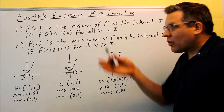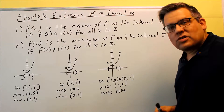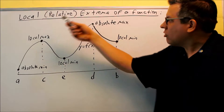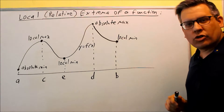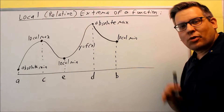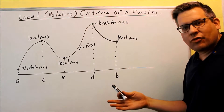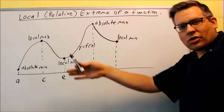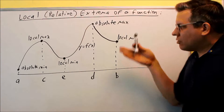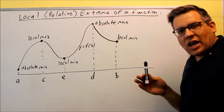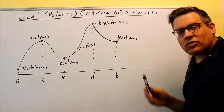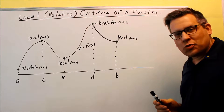Now that we've covered absolute extrema, let's take a look at local extrema — local, or also referred to as relative, extrema of a function. Instead of putting up a definition, I think it's easier to look at it graphically. I'm putting the local maxes and the absolute max and mins all in the same graph so you can see the difference between the two.